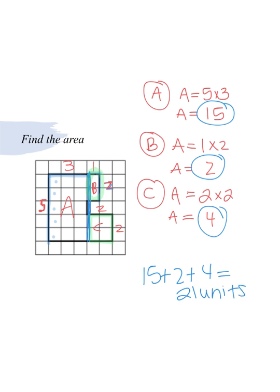So 15 plus two plus four is going to give us our answer of 21 units. Now it's 21 units squared, remember, because we're talking about area here. So technically all of these would be units squared. I just didn't write it in my work, but definitely make sure it's in your answer. Because you're doing length times width.